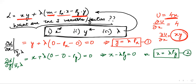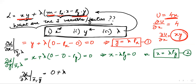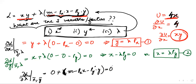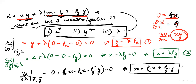Now I differentiate with respect to lambda, holding x and y constant. The term xy is constant so its differentiation is 0. Lambda is multiplied by (m − px·x − py·y), so differentiating with respect to lambda gives that entire bracket: m − px·x − py·y = 0. This gives m = px·x + py·y. This is Equation 3 — which is just my budget constraint.